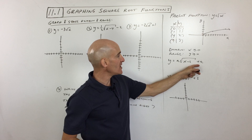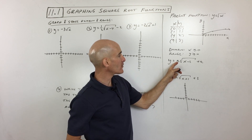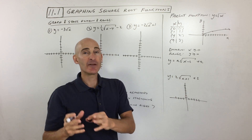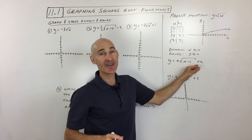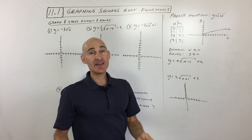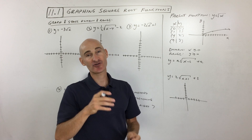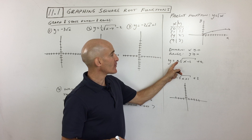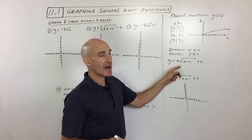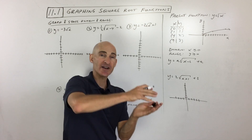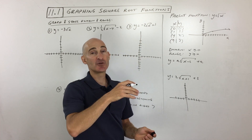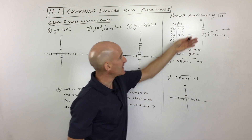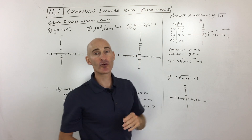Now let's look at a more general form: y equals a times the square root of x minus h, plus k. If you really understand this concept, you can apply it to any parent function. Notice the pattern: the a value in front — if a is greater than one, it's a vertical stretch. If it's between zero and one, it's a vertical shrink or compress. And if it's negative, it reflects the graph over the x-axis.